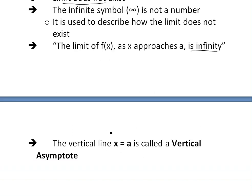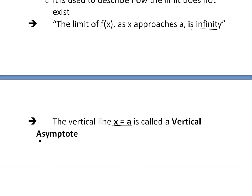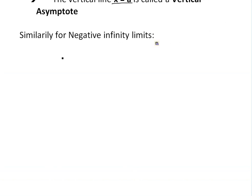That vertical line x equals a is called a vertical asymptote because you'll never reach it. Similarly, for negative numbers, we'll have negative infinite limits.